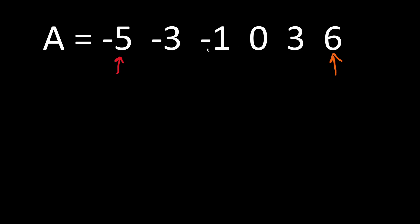We are going to compare the first and the last element of the array and see which one has a greater absolute value. In this example it's number 6 — it's greater than the absolute value of minus 5, which is 5.